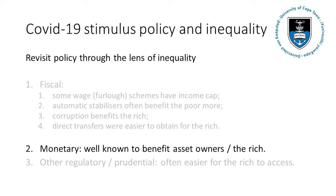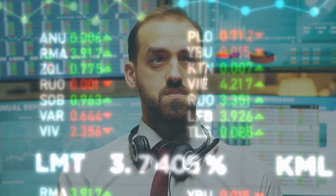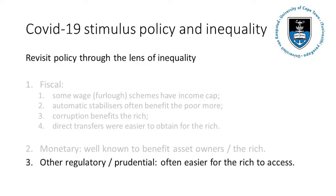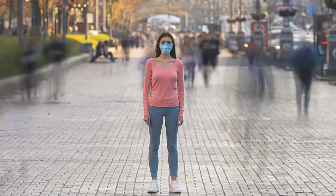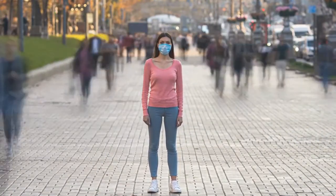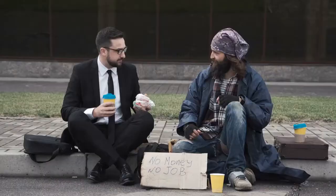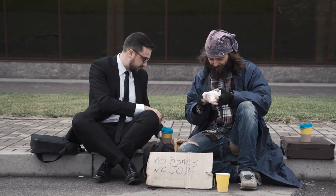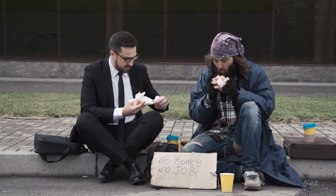Sadly, monetary policy is more likely than fiscal policy to benefit the rich, because it raises asset prices, and those assets are typically owned by those who are already wealthy. Credit guarantees and other measures are also often easier to access by the rich — a credit guarantee to a fairly wealthy company is far less risky than to a very fragile company. So, whether policies offset or amplify increased inequality depends on the mix of policies used and on how effective the government is at making sure that relief intended for the poor actually ends up with the poor.